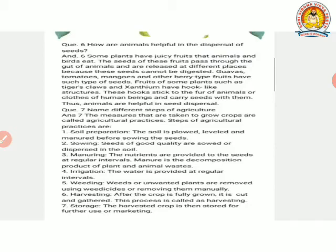Next question. Name different steps of agriculture. First, soil preparation. Soil is plowed, leveled and manured before sowing the seeds.